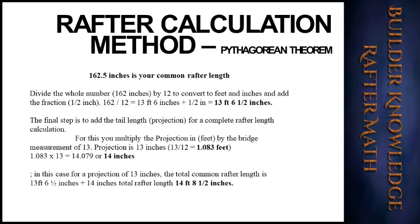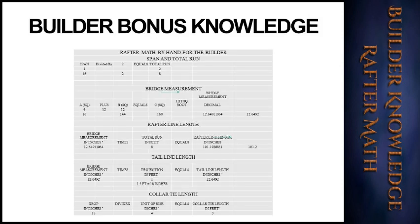The final step is to add the tail length for a complete rafter length calculation. Multiply the projection in feet by the bridge measurement of 13. The projection is 13 inches — 13 ÷ 12 = 1.083 feet. 1.083 × 13 = 14.079, or 14 inches. So for a projection of 13 inches, the total common rafter length is 13 feet 6 and a half inches plus 14 inches, for a total rafter length of 14 feet 8 and a half inches.